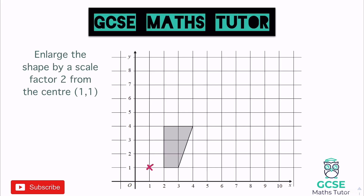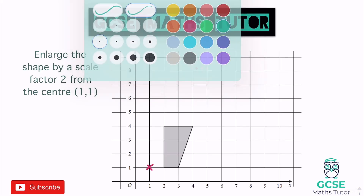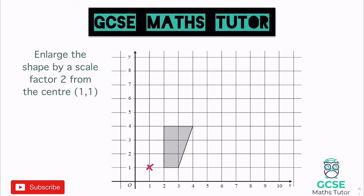A scale factor of two means the shape is going to get twice as big, projected twice as big somewhere else within the grid. There's a little process to go about finding where it will be projected. I just find one of the points to start with — I'm going to go for this top left one.